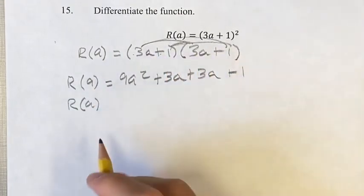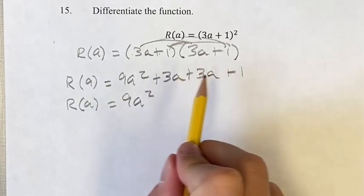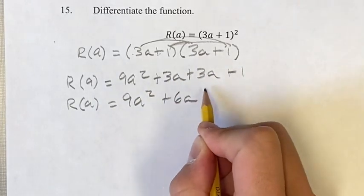Remember, if you have 2 times 2, you want to have 4 terms here before you simplify, which is going to be 9a² + 3a + 3a = 6a + 1.